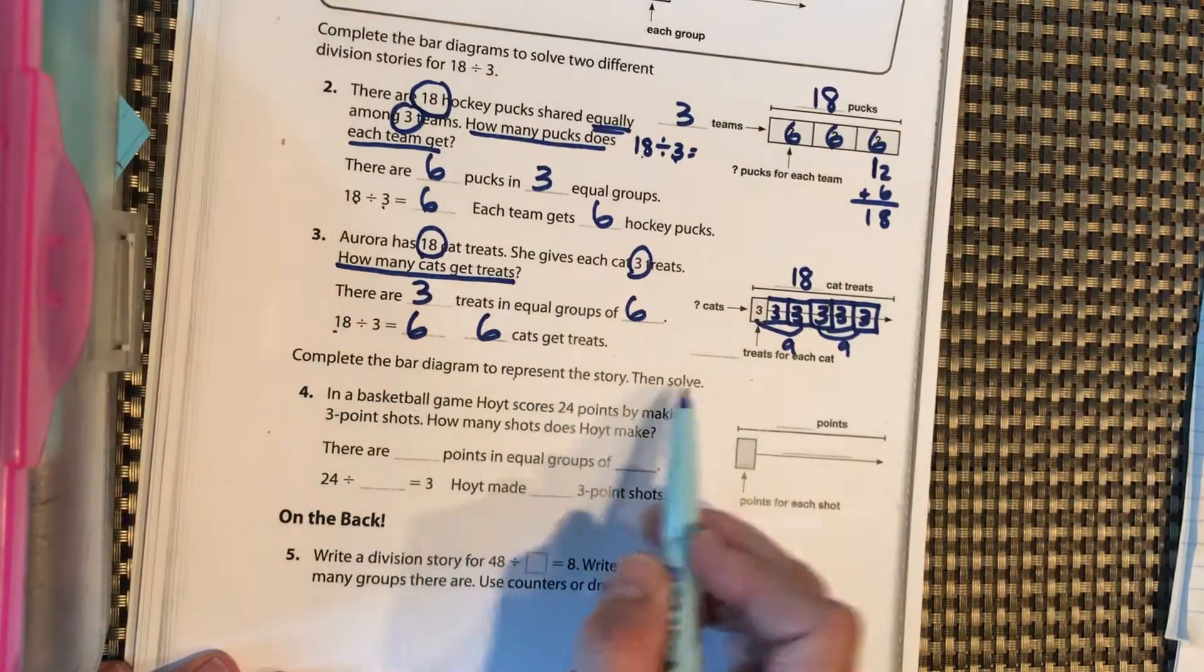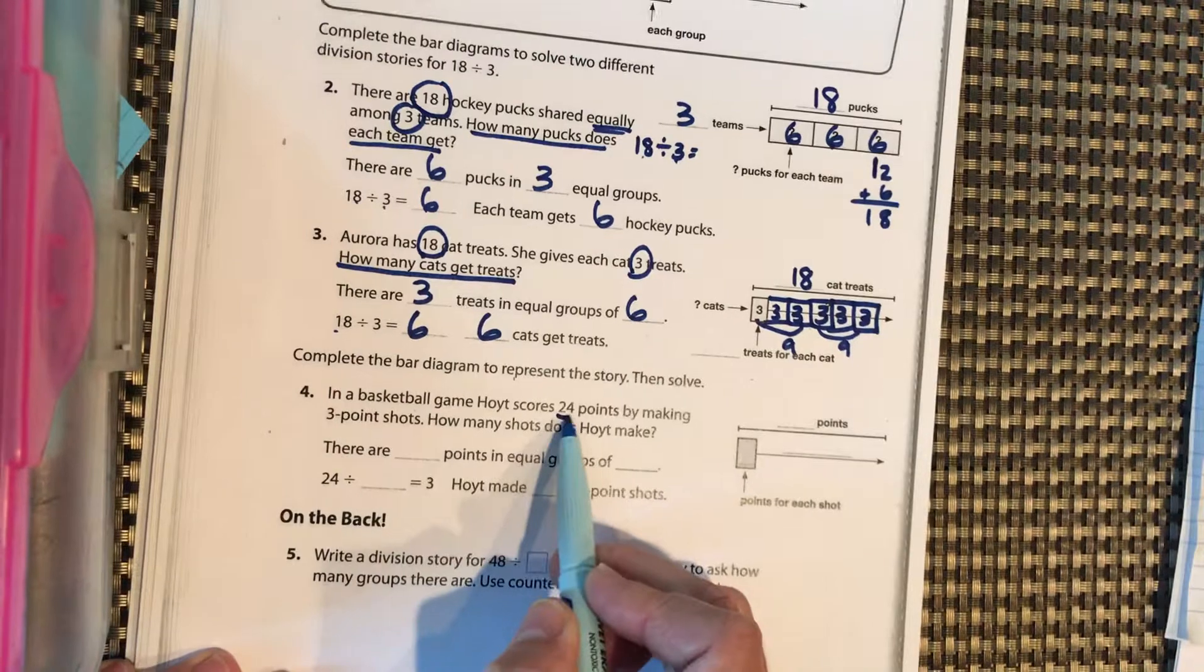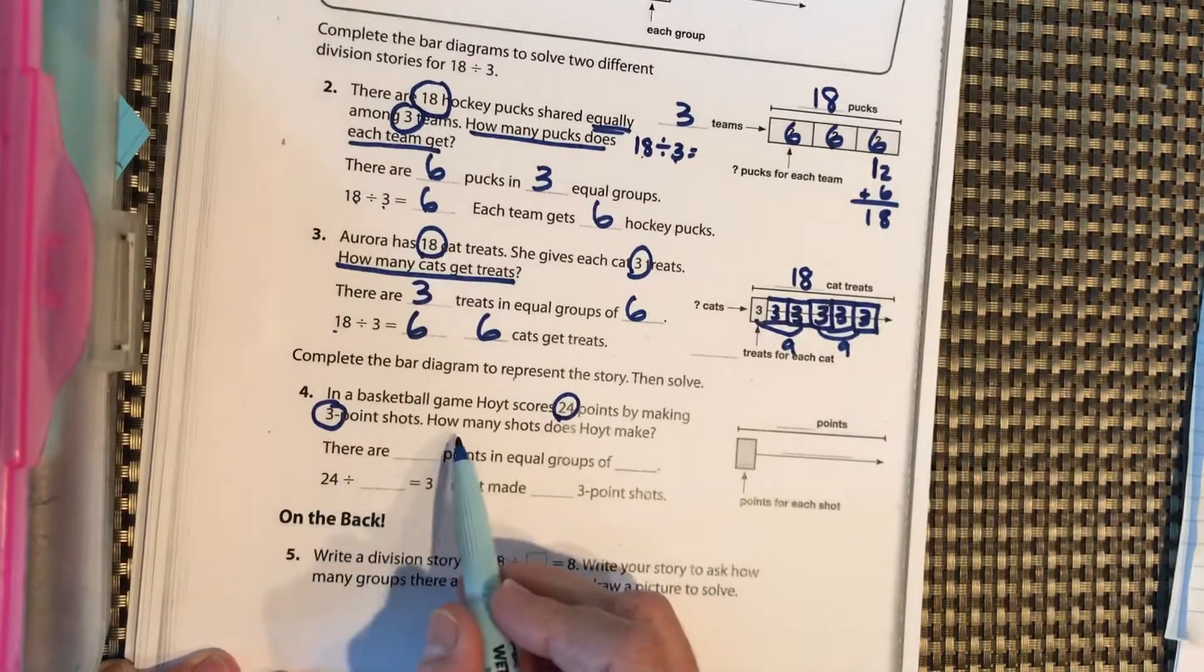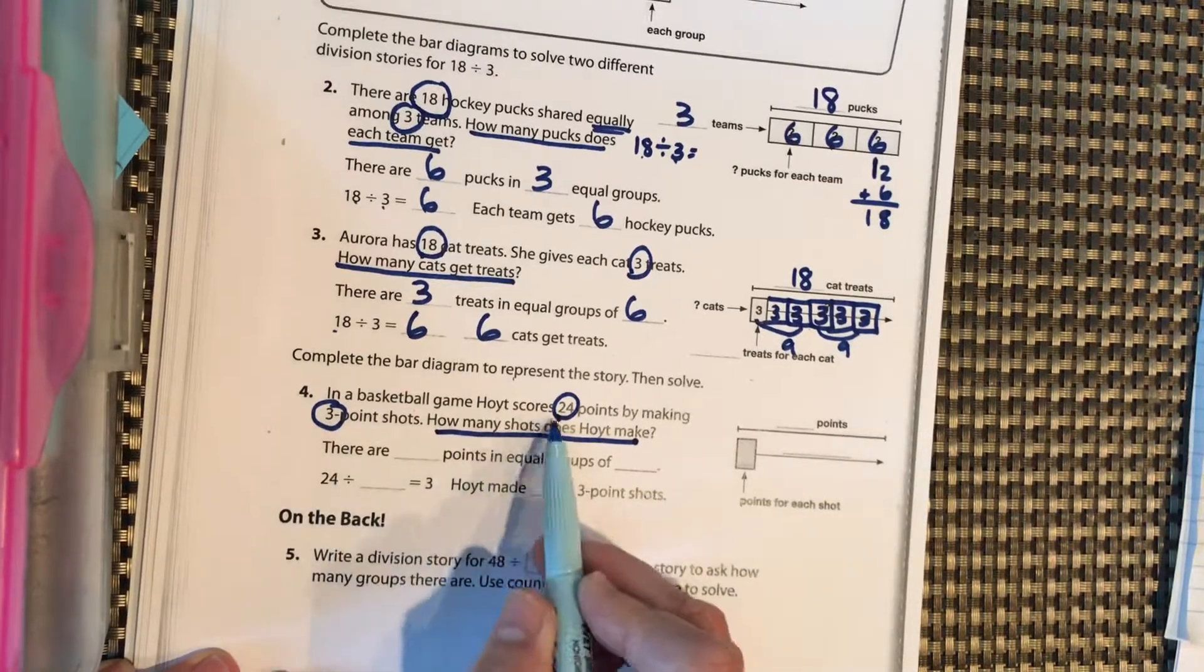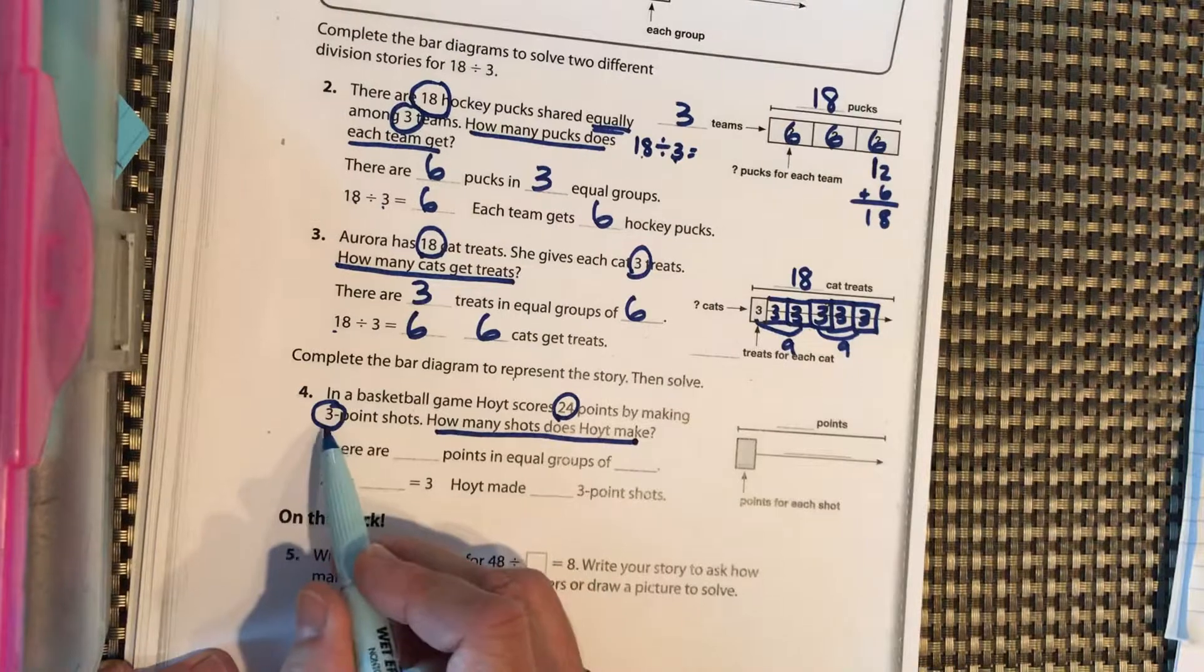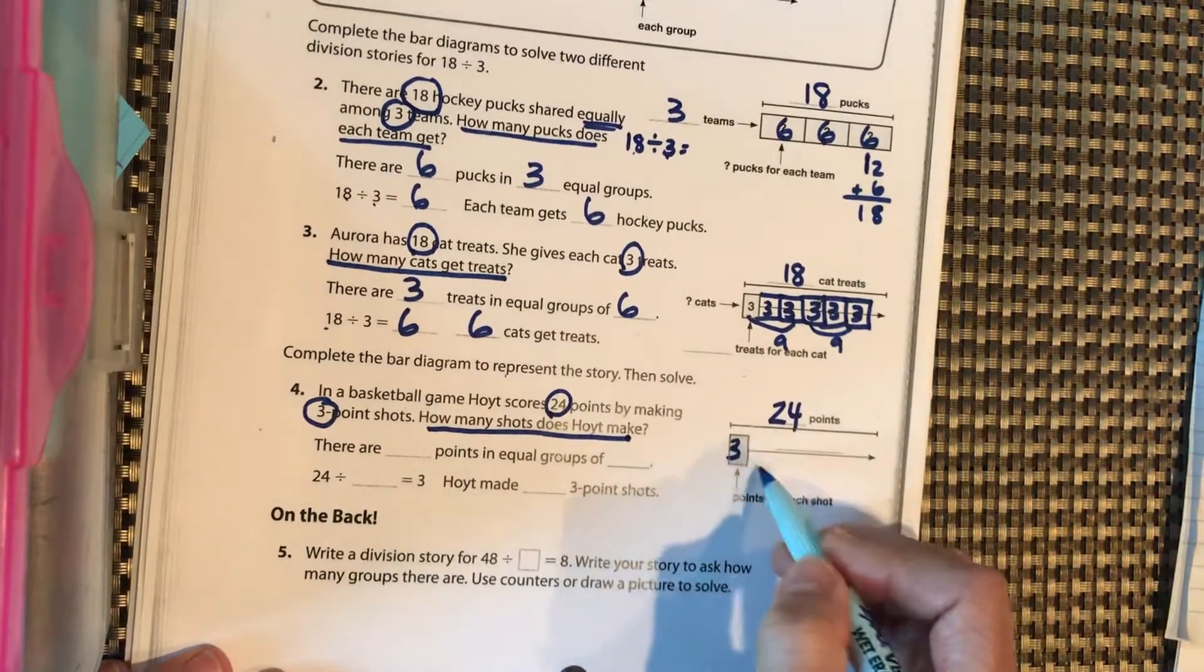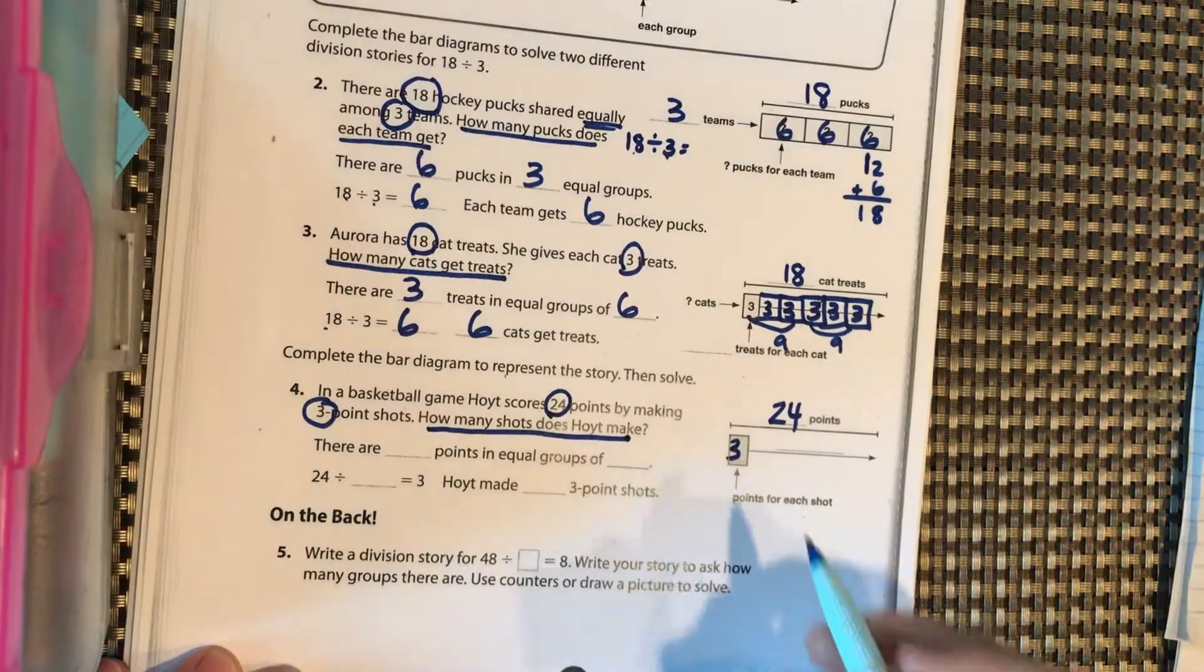Complete the bar diagram to represent the story, then solve. In a basketball game, Hoyt scores 24 points by making three-point shots. That's where you shoot it from really far away and you get it in and you get three points for each one. How many shots does he take? So how many baskets does he make at three points each to get to 24? We have equal groups because each shot is three points. We have a total of 24 points. He gets three points for each shot. So we just keep having to add groups of three here until we get to 24.